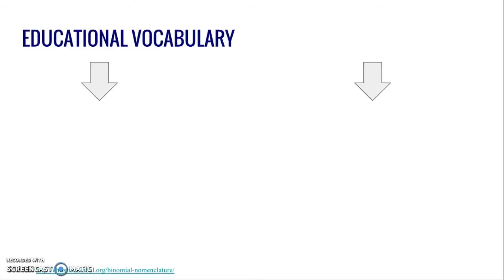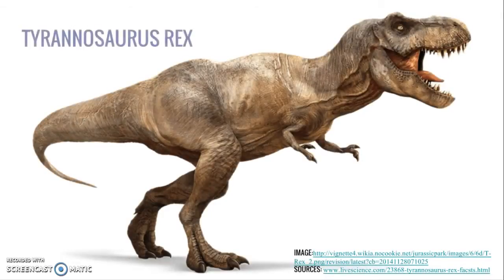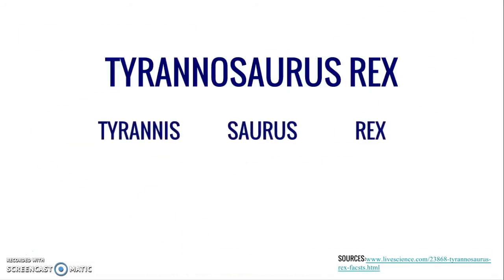When discussing Latin used in an educational setting, there are two significant uses of Latin vocabulary that many people are familiar with. One is called binomial nomenclature — a system developed to create universal names for each species using Latin words. Among scientists today, it is considered the professional way to identify organisms. This is similar to how Latin was used mainly for official documentation during the early development of Old English. One example of binomial nomenclature is T-Rex, or Tyrannosaurus Rex, which is based on three Latin words — Tyrannus, Saurus, and Rex — translating to Cruel Lizard King. The term T-Rex is so ubiquitous that many people forget it is even Latin at all, making it a great example of how Latin has blended naturally into the English language.